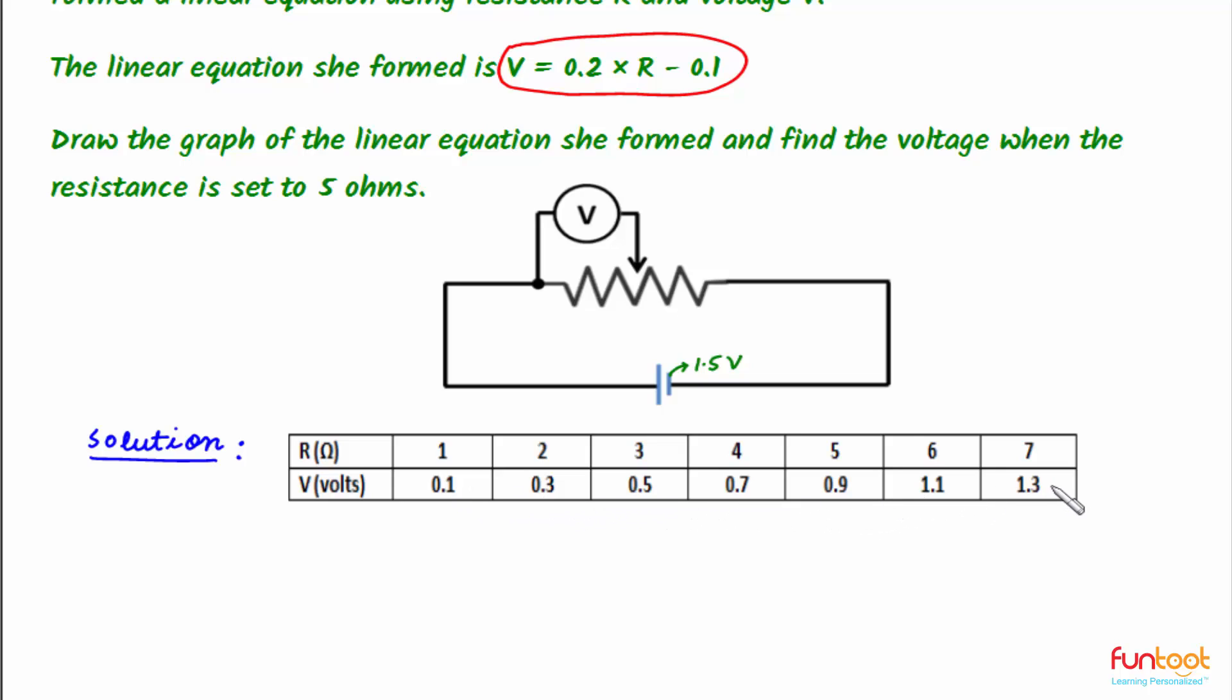For plotting the graph, we need at least two points. So here we'll take the points as (1, 0.1) and (7, 1.3). With these points, let's plot the graph.